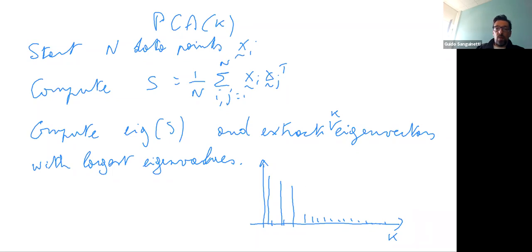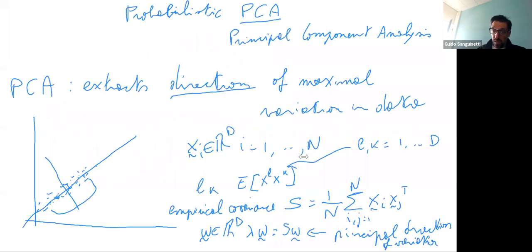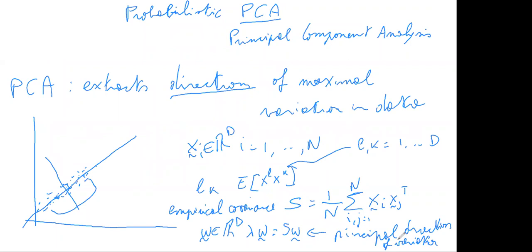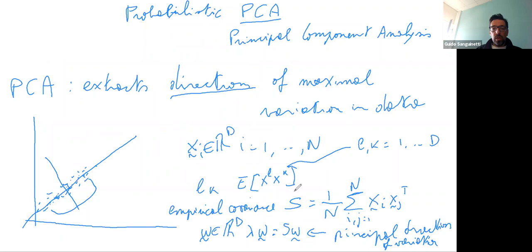From the chat: a correction — it's spelled 'principal' with A-L at the end, not L-E. Principal directions of variation. Also, regarding whether we assume the average along each component is zero — practically yes. What you do is first remove the mean; that's why it's an empirical covariance. You first center the data, subtract the mean, and then do PCA. Otherwise you will capture the mean.